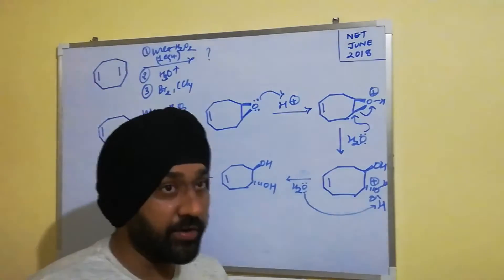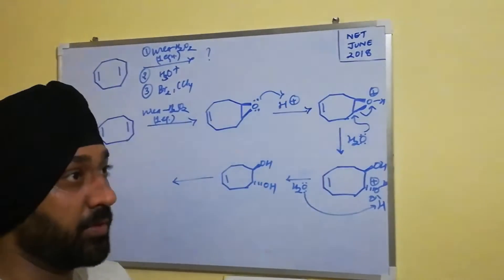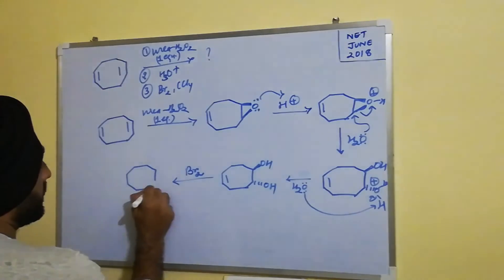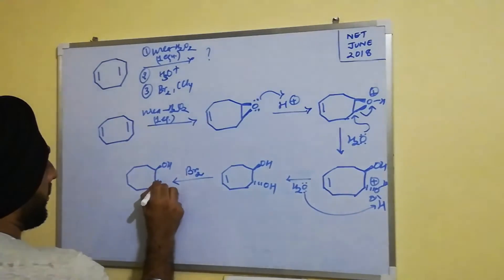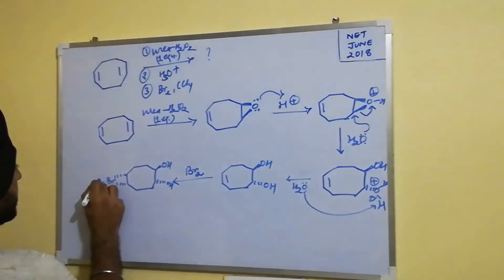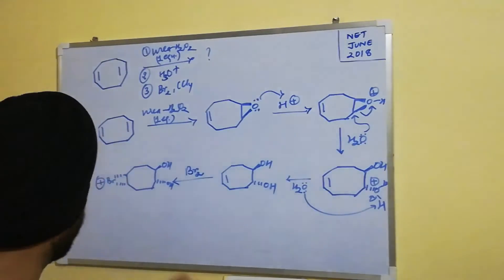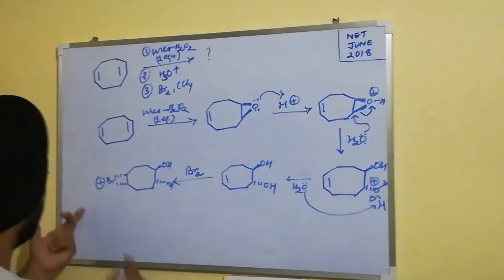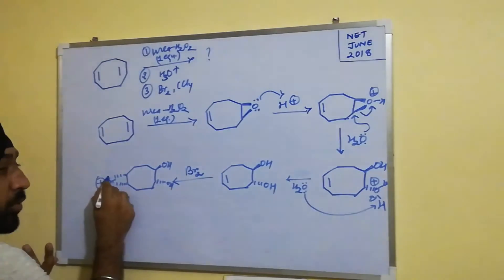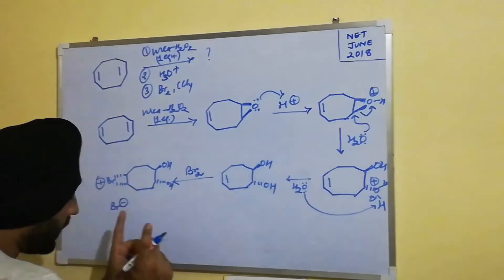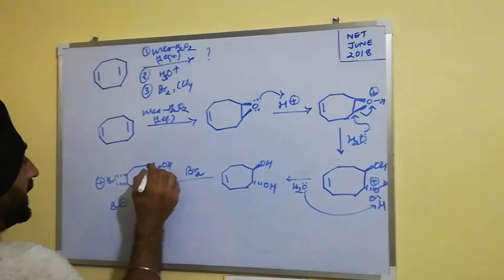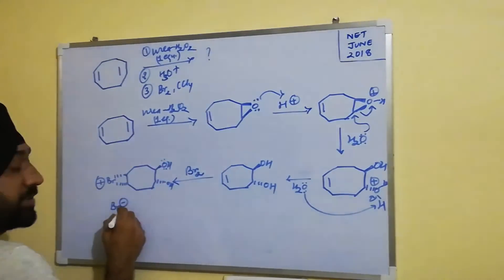Now, the bromination chemistry step: the first step is always the formation of the bromonium ion intermediate. The bromonium ion forms and there are two possibilities — it can open from the back side to give the dibromo product, or the hydroxyl oxygen in the substrate can act as a nucleophile, since oxygen has greater nucleophilicity than bromine.